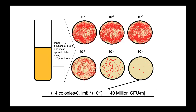What that might look like is that we have a sample — maybe a tube of urine or broth — and we make one-in-ten dilutions of that suspension, then make spread plates of those dilutions, spreading 100 microliters onto each plate and counting colonies. As our dilution factor goes up and the sample becomes more dilute, we start to be able to resolve individual colonies. Here at 10 to the minus 6 — a one-in-a-million dilution — if we count 14 colonies in 0.1 mils, divided by our dilution factor, that gives us an initial concentration of 140 million CFUs per mil.